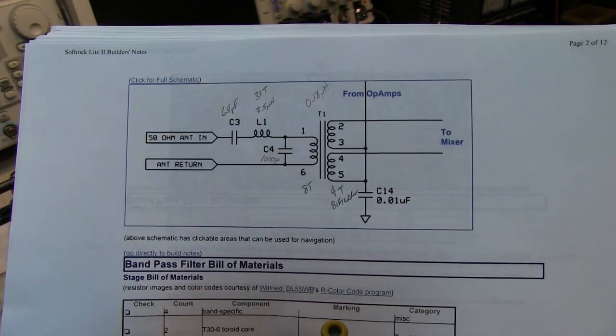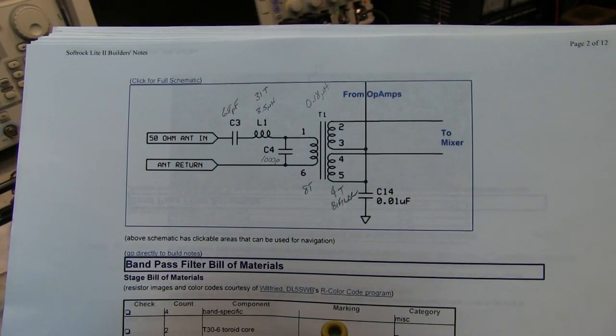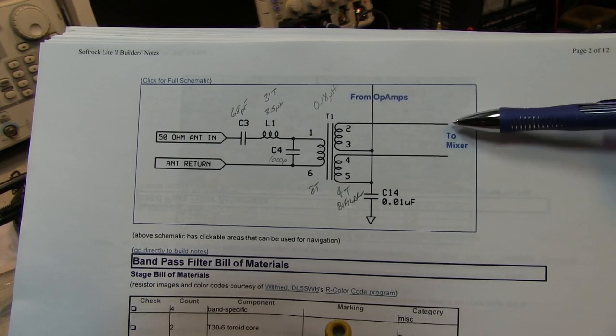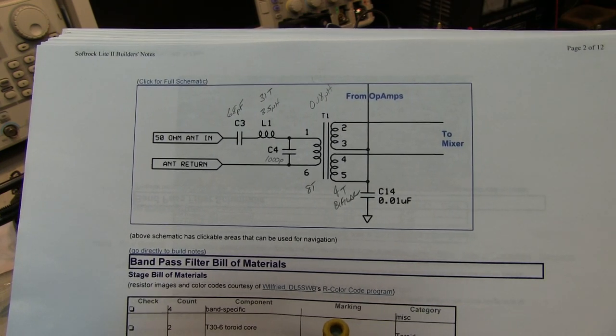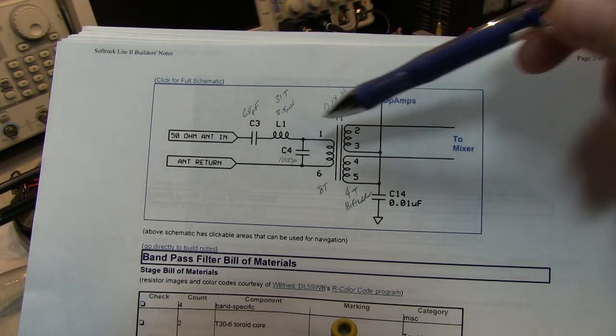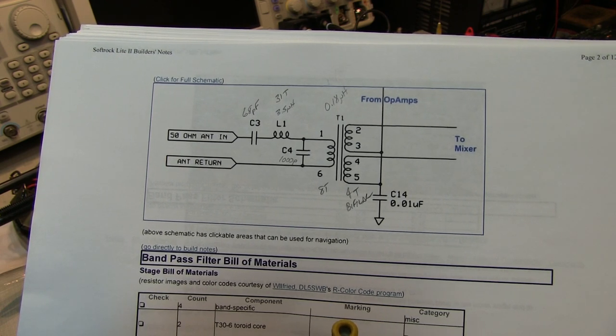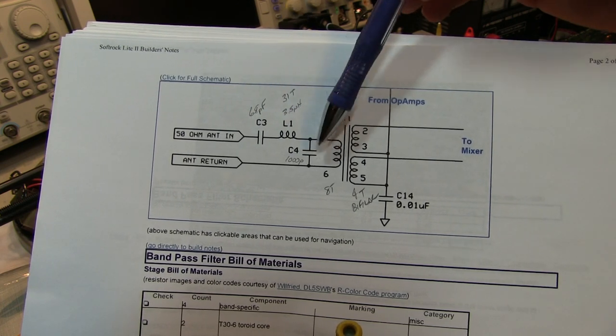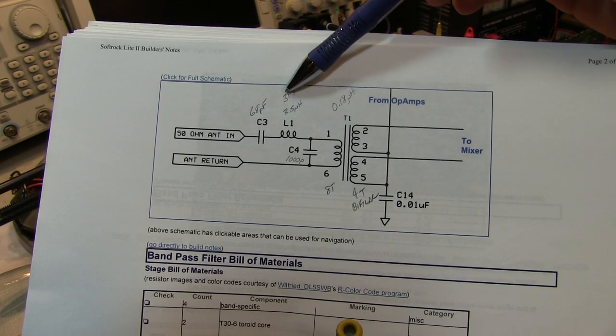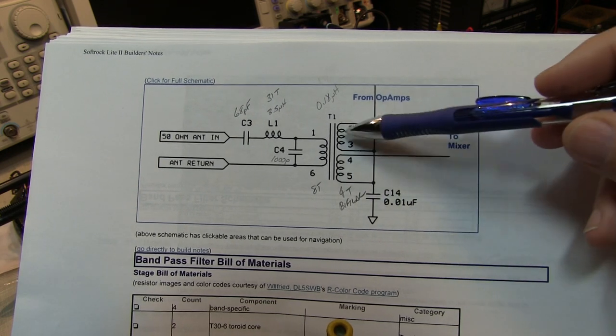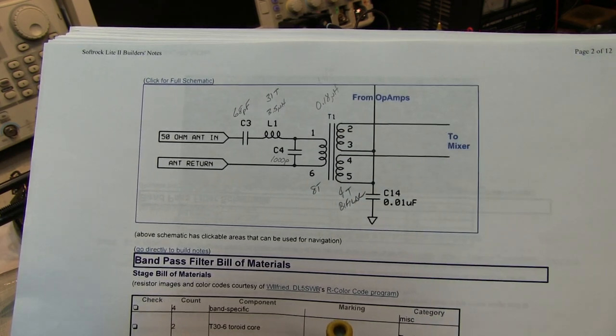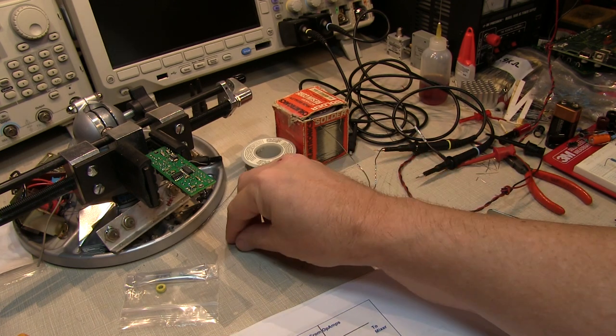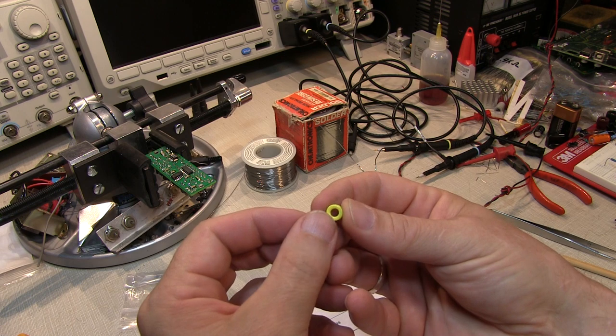So the next and really final assembly step is to put together the bandpass filter and splitter. And it really just consists of two capacitors, an inductor, and a toroidal transformer to provide equal outputs to the quadrature mixers. The components that are used in the bandpass filter are selected depending on which band you want to use. And for the 30-meter band, the 10 MHz band, it would be a 68 pF, 1,000 pF, a 3.5 microhenry inductor, which is 31 turns on a T30-6 toroid, and then the inductor, which is 8 turns and 4 turns bifilar wound.